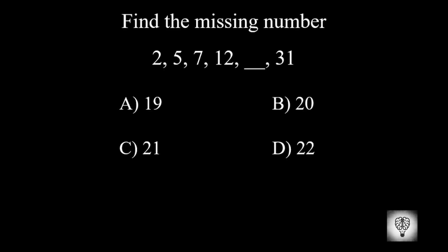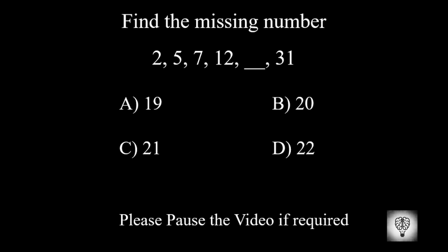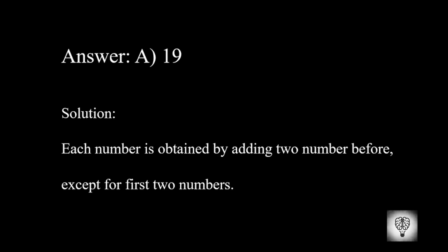Find the missing number. Please pause the video if required. The correct answer is 19. Each number is obtained by adding the 2 numbers before it, except for the first 2 numbers.